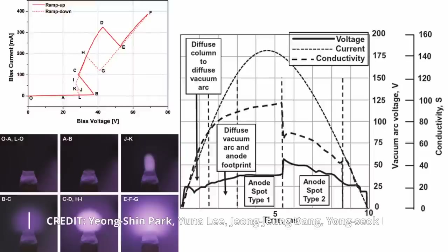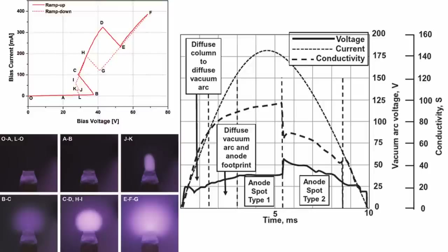There are at least three different modes. Diffuse mode: this is a low current mode where the anode is inert. Footprint mode: here there is an intermediate current and the anode starts to be an active part of the discharge — the spots are luminous and cause the anode to melt. Real anode spot mode: there is a high current associated with a very high temperature and the vaporization of the anode material.